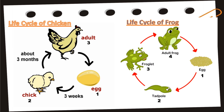Next, we have the life cycle of the frog. The first stage is the egg. Next, we have the tadpole. The third stage is the froglet, and the last stage is the adult frog.